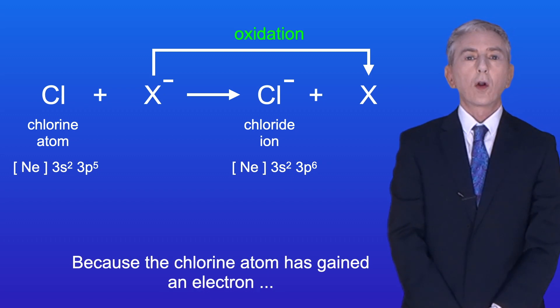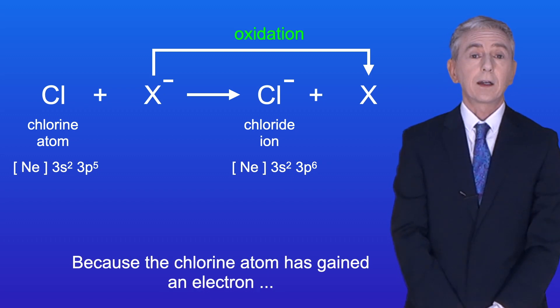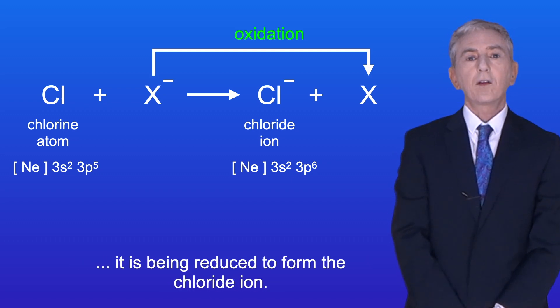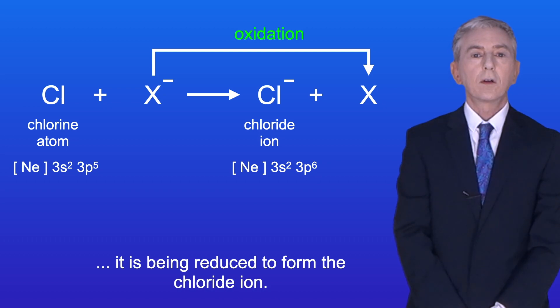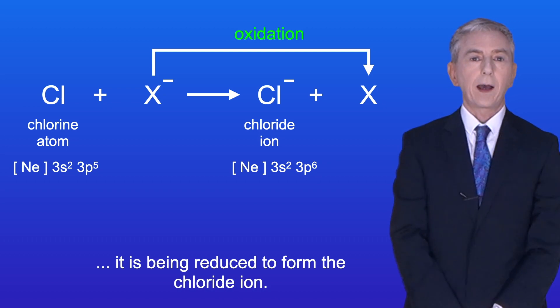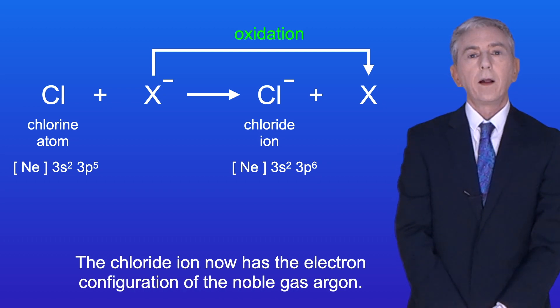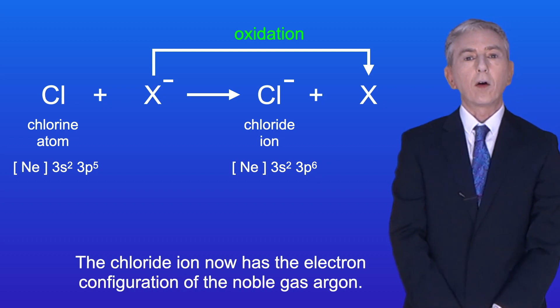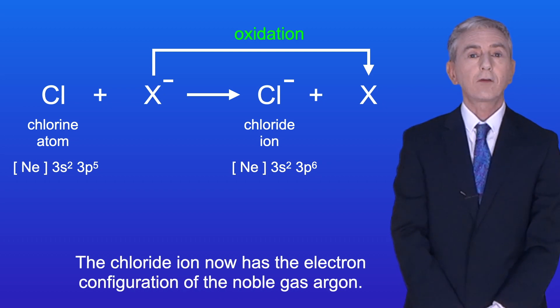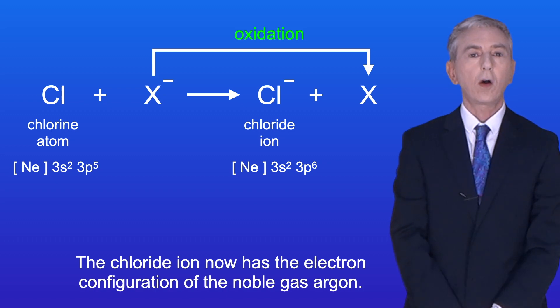Because the chlorine atom has gained an electron, it is being reduced to form the chloride ion, and the chloride ion now has the electron configuration of the noble gas argon.